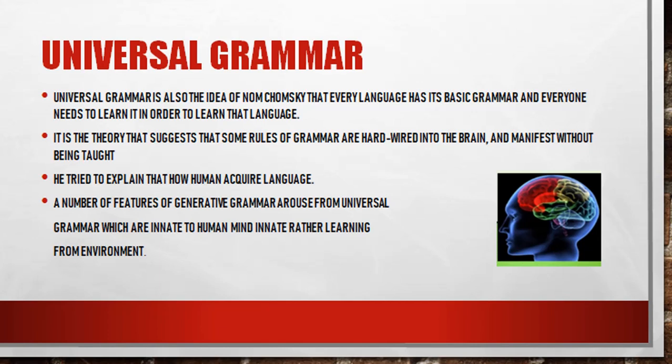Noam Chomsky also gave the concept of Universal Grammar. He said every language has its basic grammar which everyone needs to learn. This theory suggests that some rules of grammar are hard-wired into the brain — meaning we learn them in childhood. Our parents did not explicitly teach us that 'he' and 'she' are nouns, or how to address someone; these things come through acquisition rather than explicit teaching.